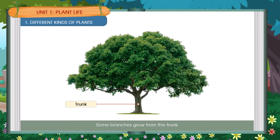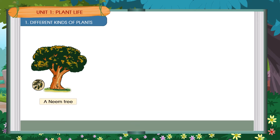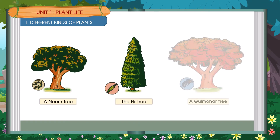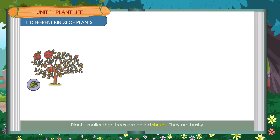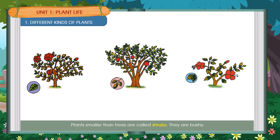Some branches grow from the trunk. A Neem Tree, A Fir Tree, A Gulmohar Tree. Plants smaller than trees are called Shrubs. They are bushy. A Rose Shrub, A Pomegranate Shrub, A Hibiscus Shrub.